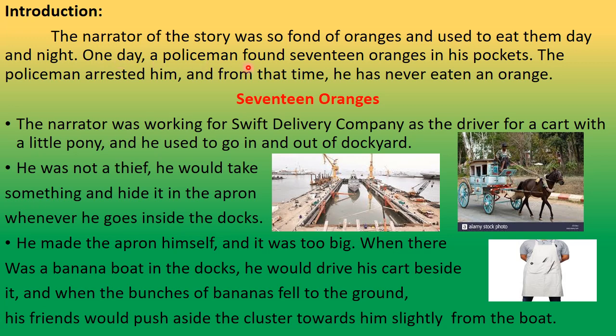One day, a policeman found 17 oranges in his pockets and arrested him. From that time, the narrator started hating oranges — he started showing hatred toward them. We are going to find out why the police arrested him, why he was carrying 17 oranges, and why he went from greatly liking oranges at the start to disliking them by the end.